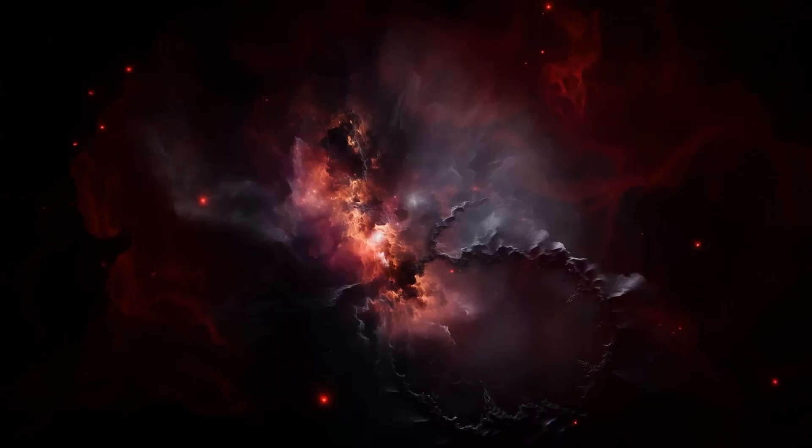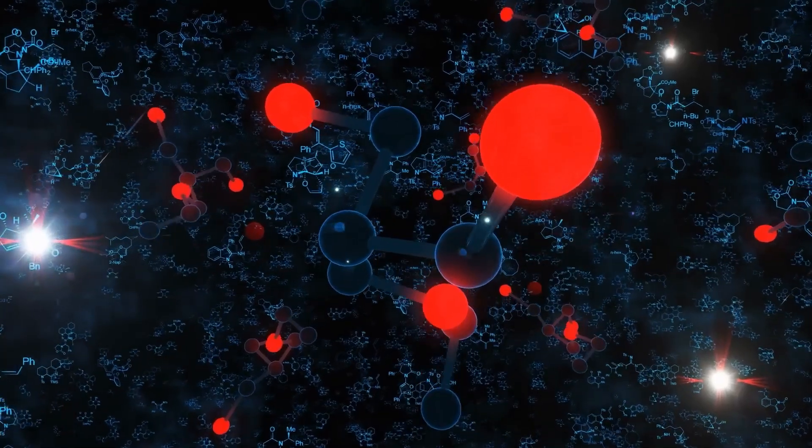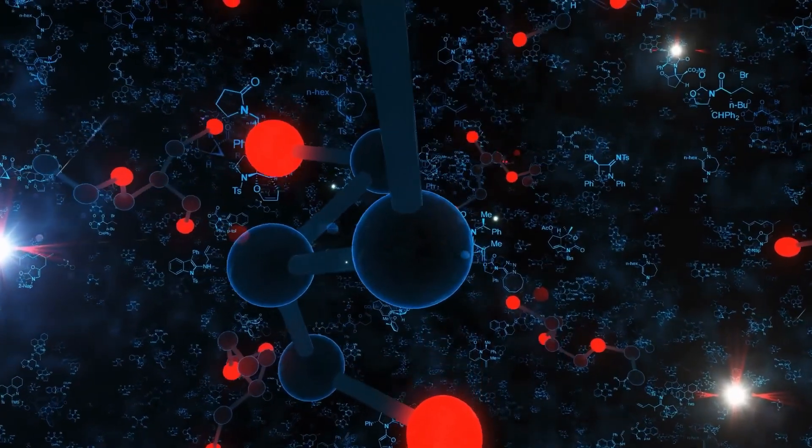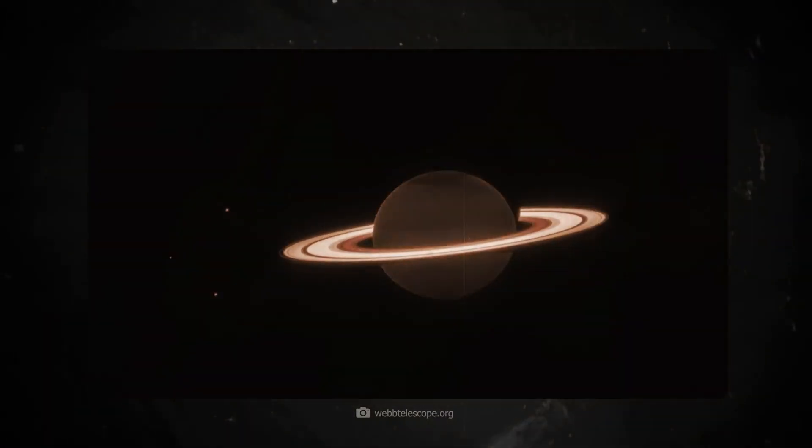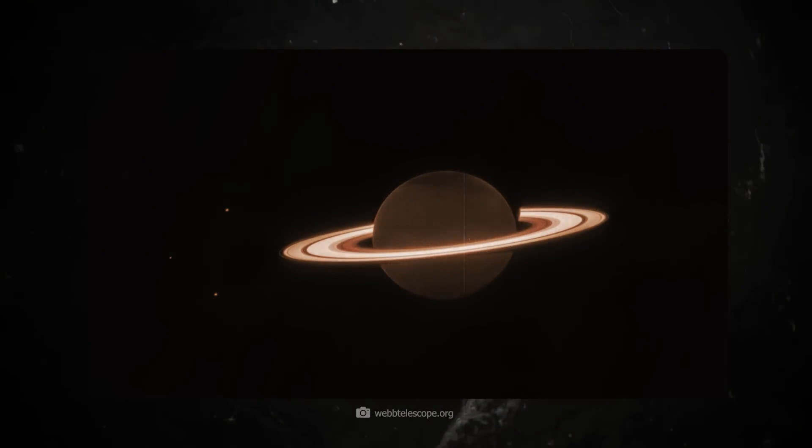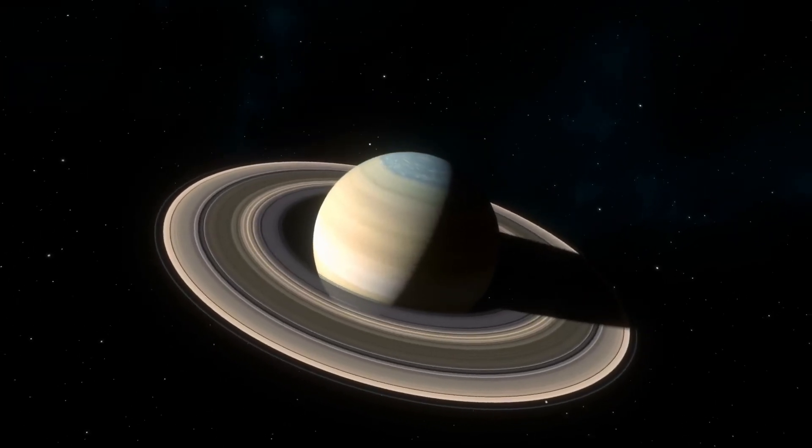Saturn shines in Webb's pictures as if it were really another planet. One question in particular has long preoccupied scientists: what is really going on in Saturn's ring system? Until now researchers have only had vague assumptions about this.